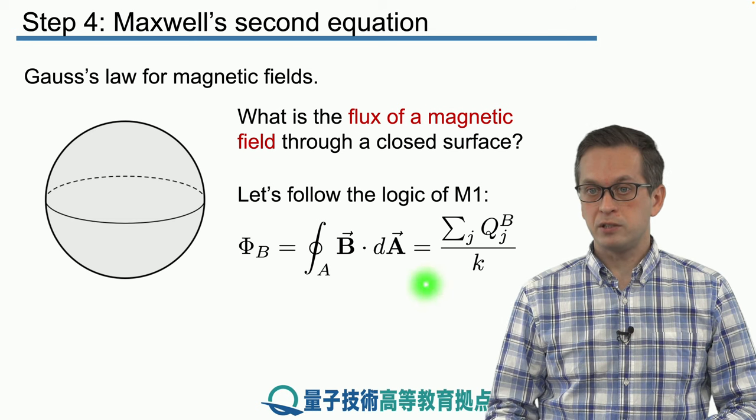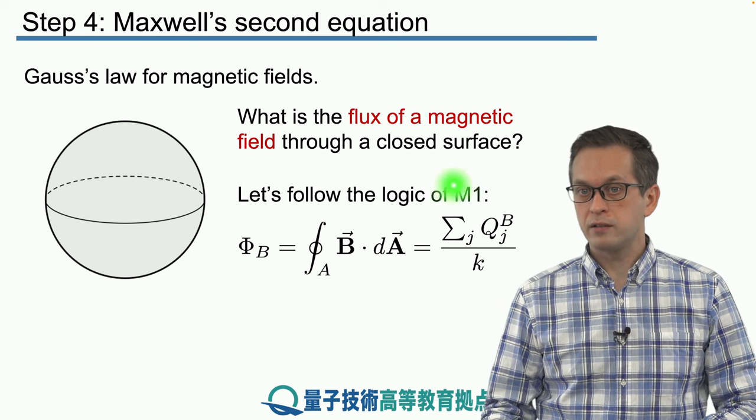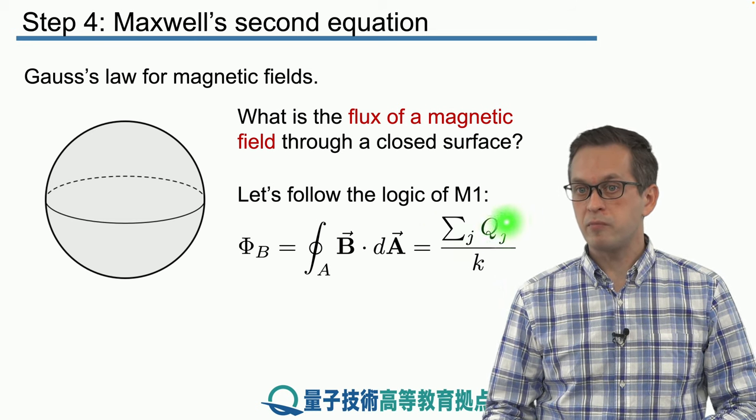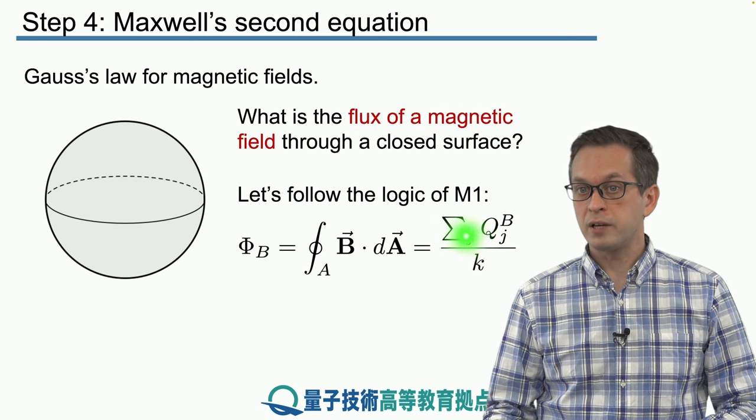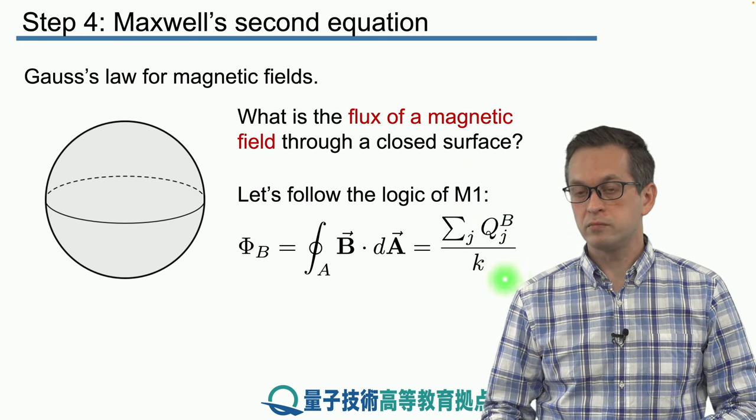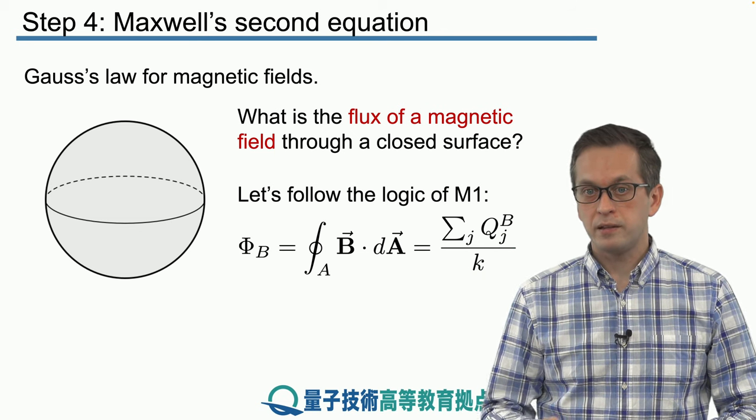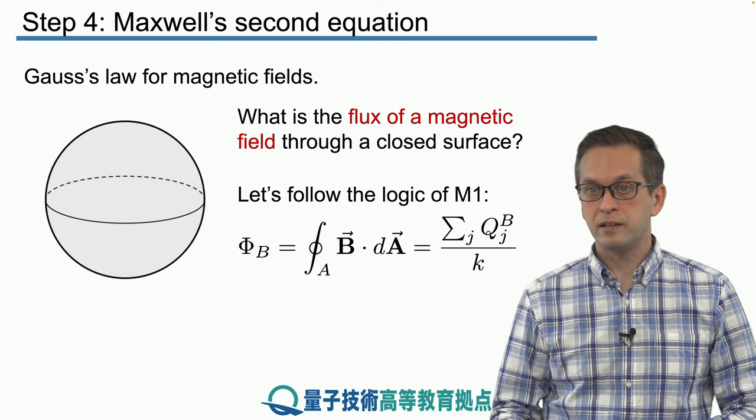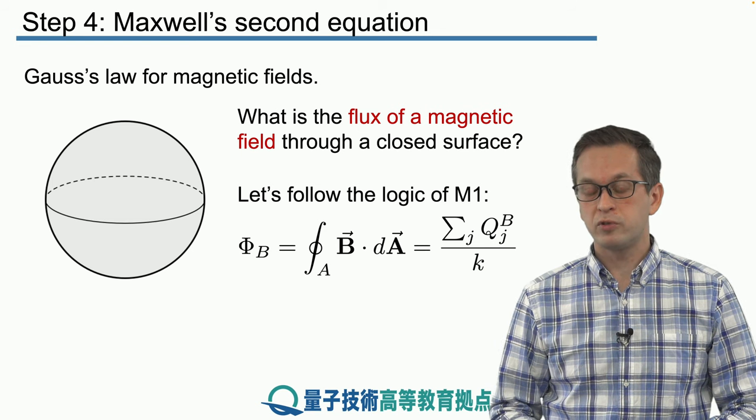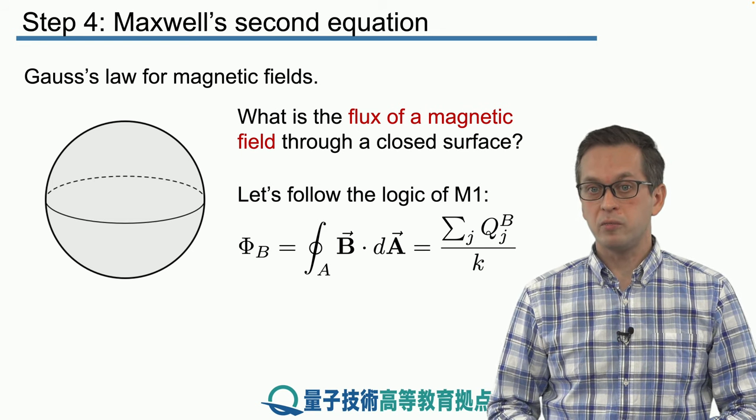And we ask the question, does it make sense to write the total flux as some sum of these magnetic charges over some constant k? And the thing about magnetic fields is that they are not produced by magnetic monopoles.